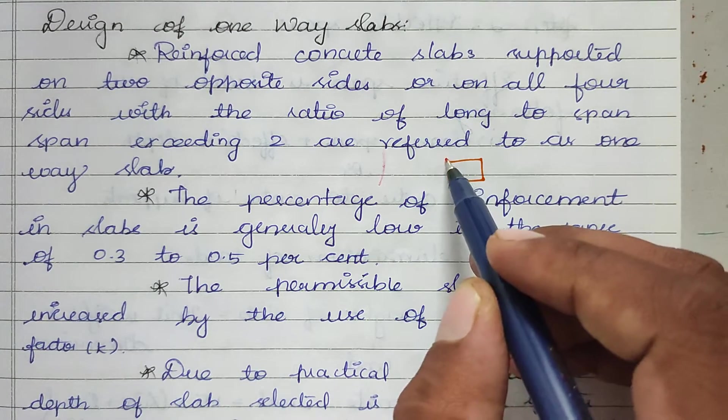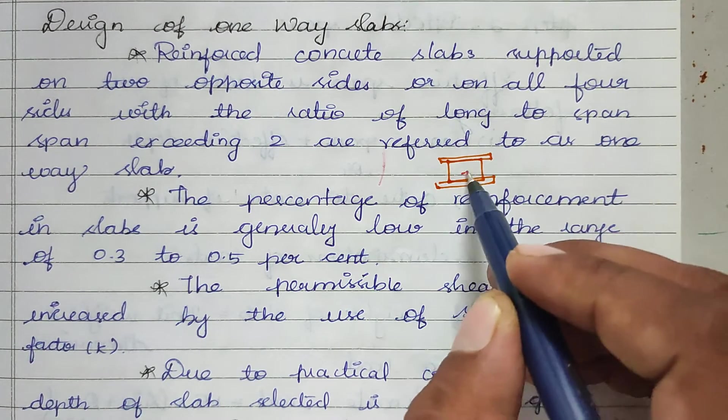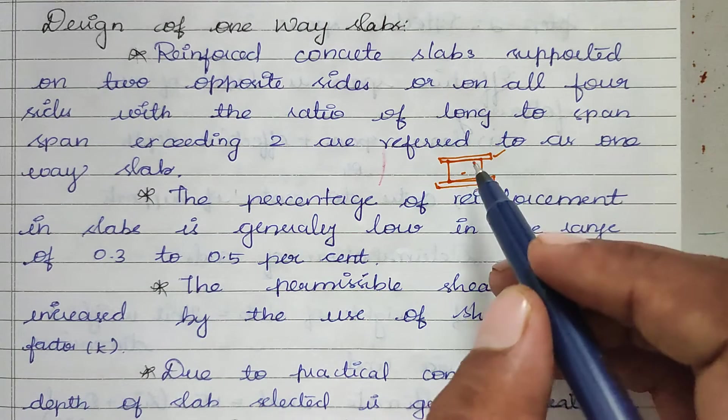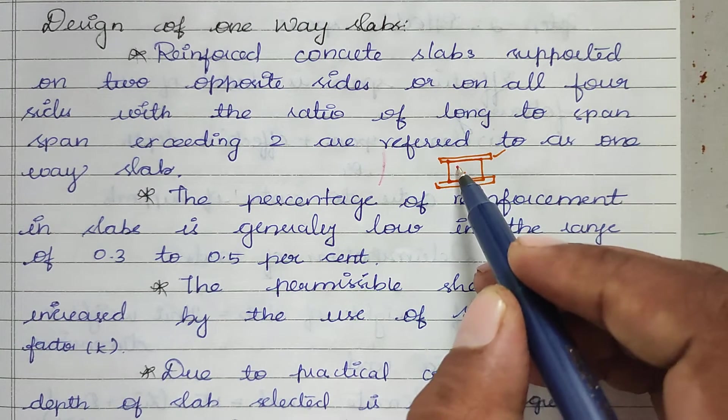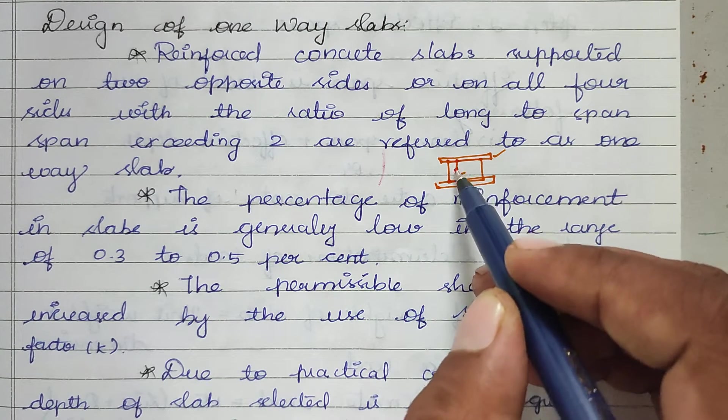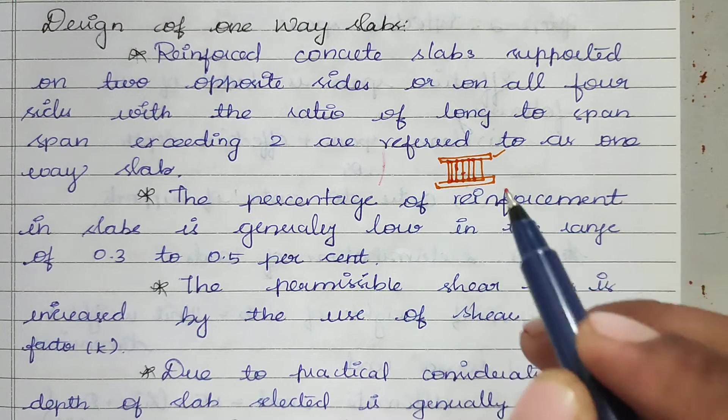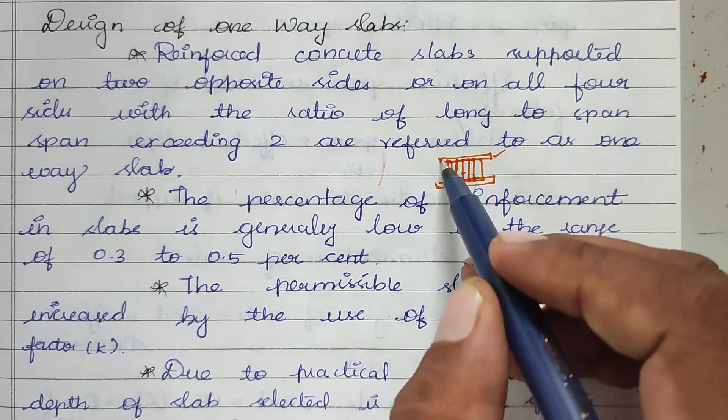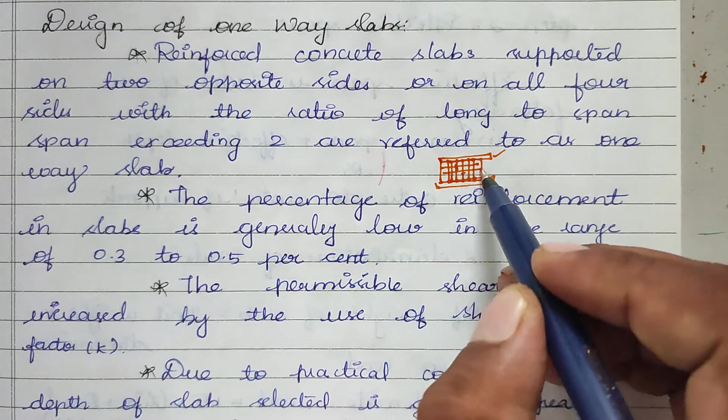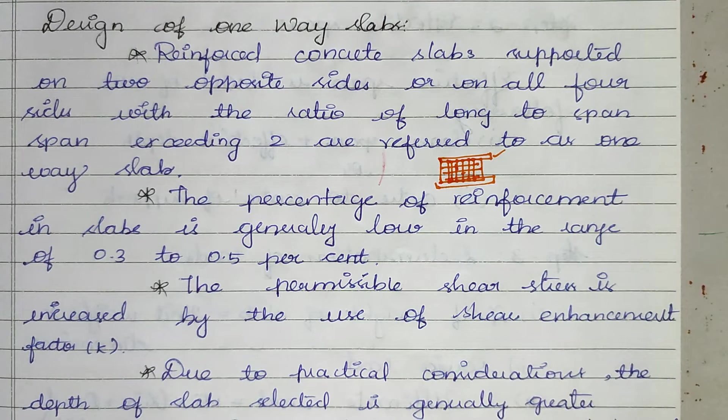Whenever the slab is there, the load will be distributed to the beam. If the load is distributed in only one direction, that is called one-way slab. If the load is distributed in all directions, that is called two-way slab.